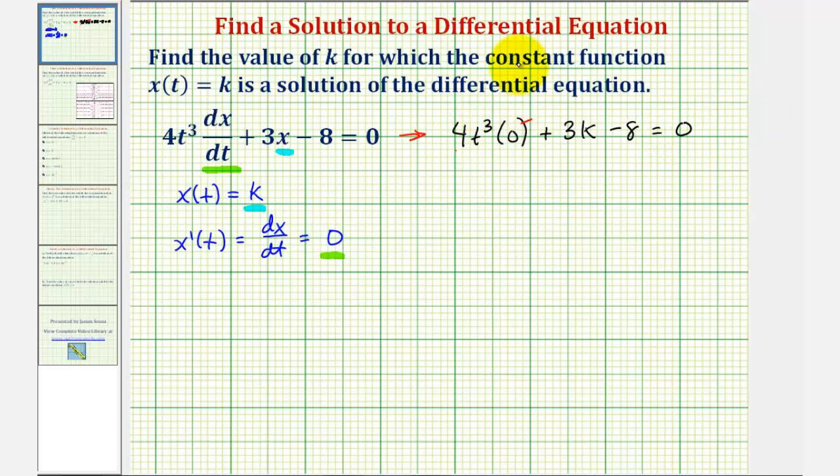Notice this part is zero and therefore we have 3k - 8 = 0. To solve for k we would add 8 to both sides giving us 3k = 8. So if x(t) = k is a solution, then x(t) = 8/3 would be the function we're looking for.